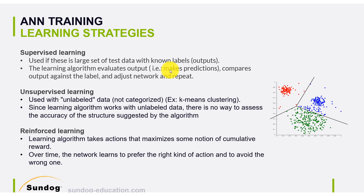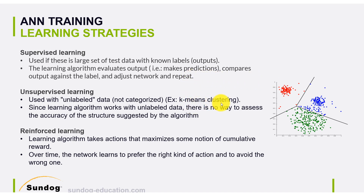The second type of learning is what we call unsupervised learning. Here, we actually use unlabeled data — there is no label. We just show the input to the network, and the network on its own tries to classify different categories or different classes. We show the data to the network, and in unsupervised fashion it can learn on its own. A very famous technique used for unsupervised learning is called k-means clustering.